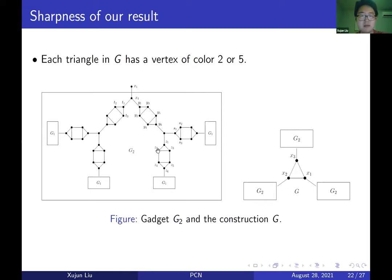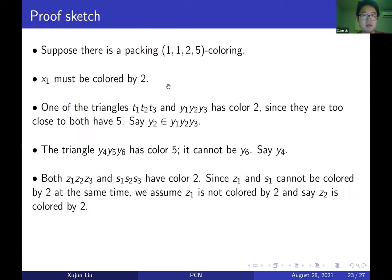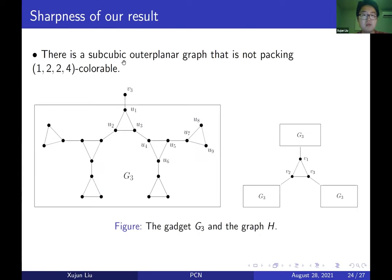This shows the construction is a sharp example: there exists a subcubic outer planar graph which is not packing 1-1-2-5 colorable. Similarly, one can show there are subcubic outer planar graphs which are not packing 1-2-2-4 colorable and not packing 1-1-3-4 colorable, confirming that our result of 1-1-2-4 is sharp.